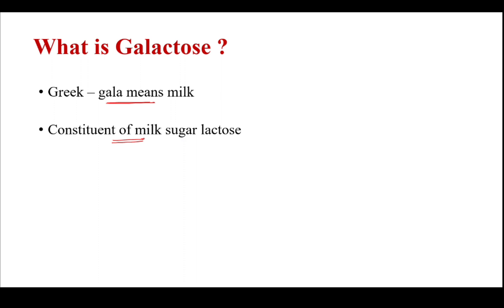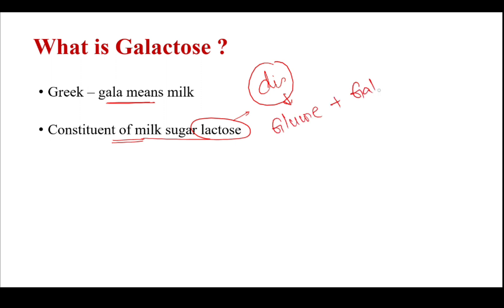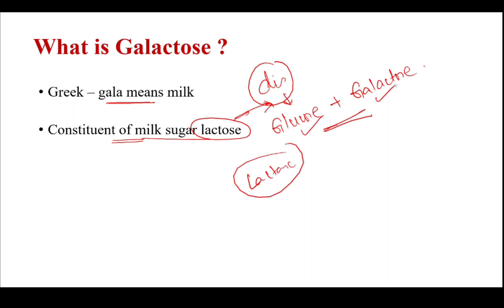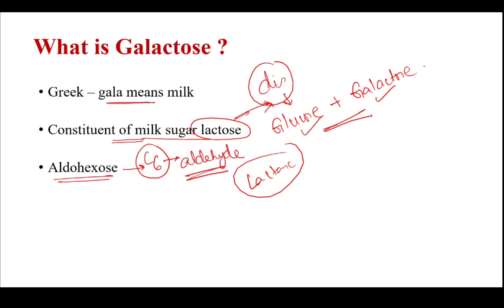Galactose is an important constituent of milk sugar, that is lactose. Lactose is a disaccharide made of glucose and galactose. Whatever lactose is present in milk or milk products is hydrolyzed in the presence of the enzyme lactase to form glucose and galactose. Galactose is an aldo-hexose — it is a six-carbon compound with an aldehyde as its functional group.